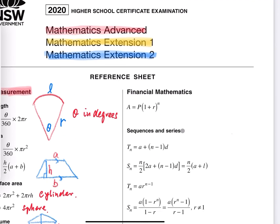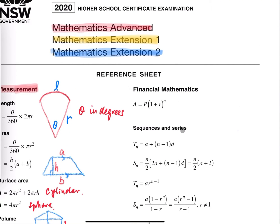Next is financial maths, which is also for advanced students — highlighting in red. This is the formula for compound interest. A is the accumulated amount, P is the principal, R is the interest rate, and N is how many times it compounds. The N can sometimes be tricky — it's determined by how the interest compounds. For example, if the interest rate is 12% per annum and we put money in the bank for two years...